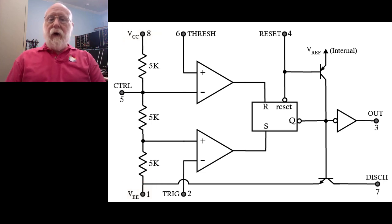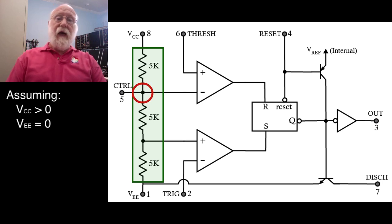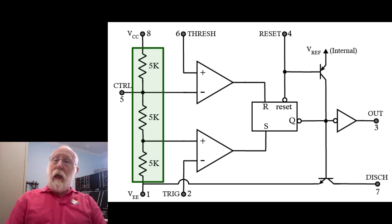The first thing you'll note in the block diagram here is that there is a stack of three 5K resistors in a row. Now, these actually just act like a voltage divider. The voltage just below the topmost 5K is going to be two-thirds of the difference between VCC and VEE. And the voltage just above the bottom one is going to be about one-third that difference.